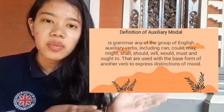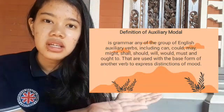The definition of an auxiliary modal is a grammar — any of the group of English auxiliary verbs that are used with the base form of another verb to express the distinction of mood. I've made 4 points so you can see this.